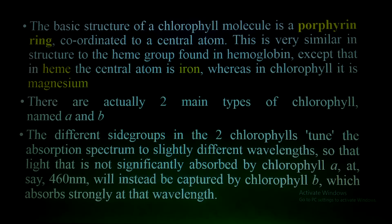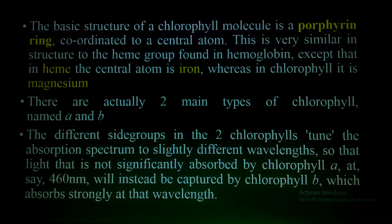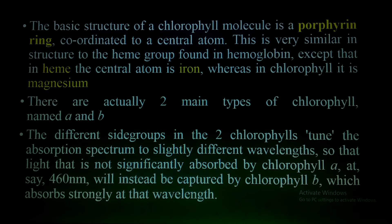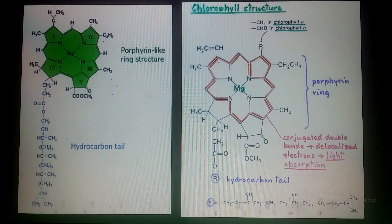There are actually two main types — chlorophyll a and chlorophyll b — but there are also types c, d, e, and f, which are present in algae, as well as bacterial chlorophyll found in bacteria. I will focus on chlorophyll a and b in this lecture. The different side groups present in chlorophyll help in absorbing light at slightly different wavelengths, so light not significantly absorbed by chlorophyll a will instead be captured by chlorophyll b.